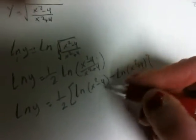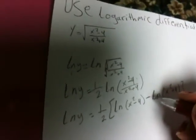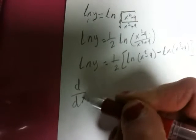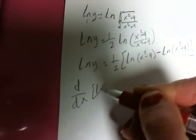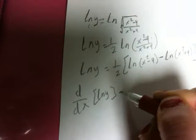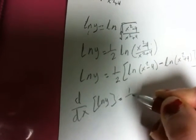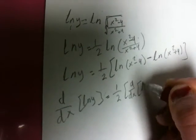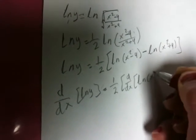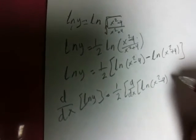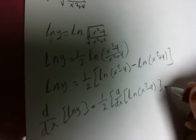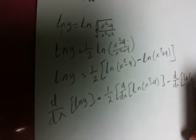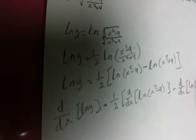When we have division inside the log, we can separate the terms using a negative sign. Now we take d/dx of both sides: d/dx of ln y equals one-half times d/dx of ln(x squared minus 4), minus d/dx of ln(x squared plus 4).